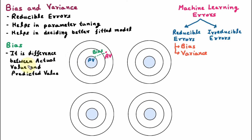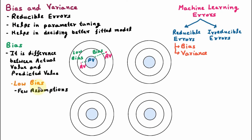Bias is of two types. The first one is low bias. If we have an actual value which is very near to the predicted value — meaning the difference between actual value and predicted value is very small — this is low bias. In low bias, we take few assumptions. As the assumptions are very less, that's why the difference between actual and predicted values is small.